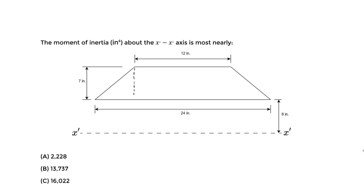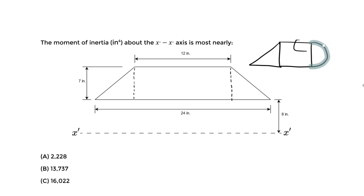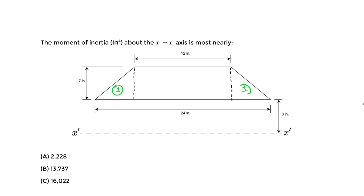I'm doing this specifically to prepare us for shapes that are not so simple, such as a rectangle combined with a circle, half a circle, or a triangle. We'll solve any moment of inertia problem by breaking the shape into basic shapes. Here we have two basic shapes: a triangle (shape one) and a rectangle (shape two).